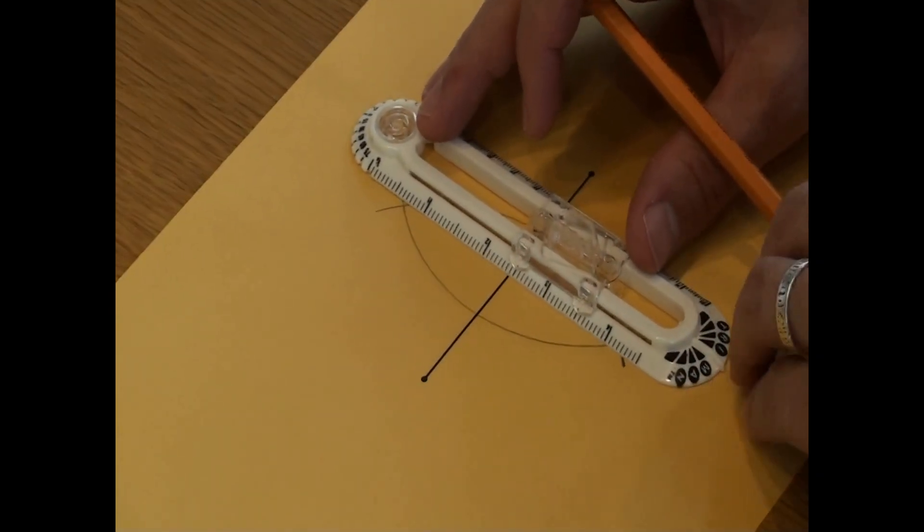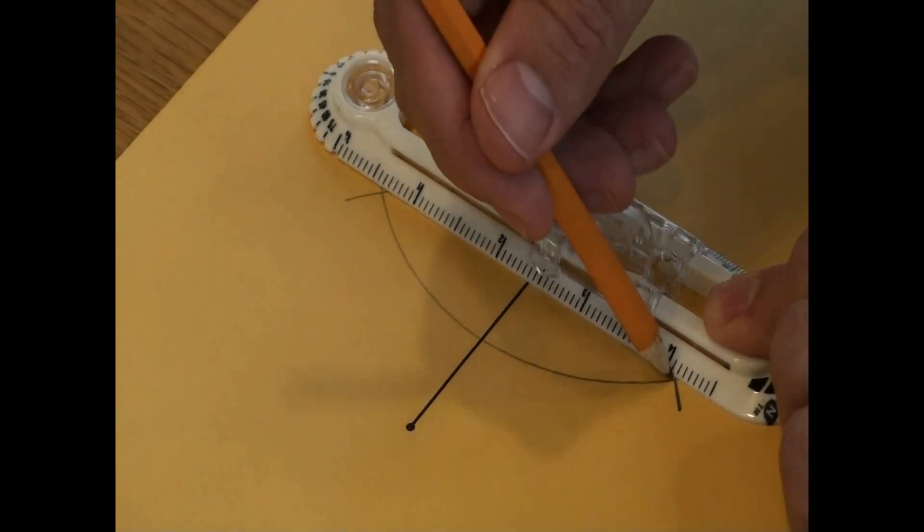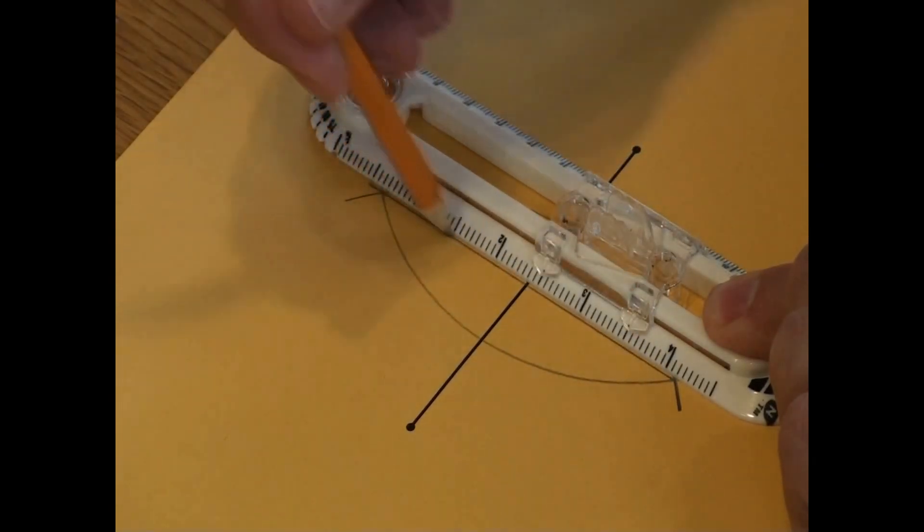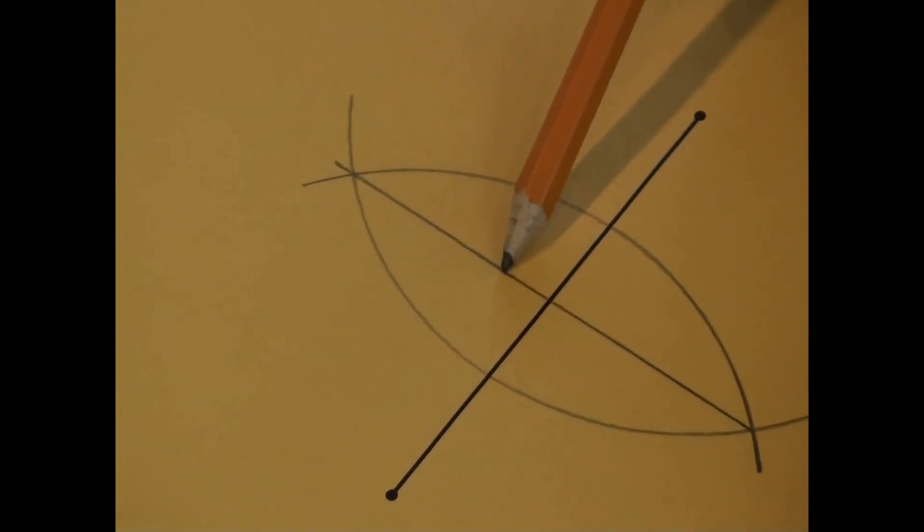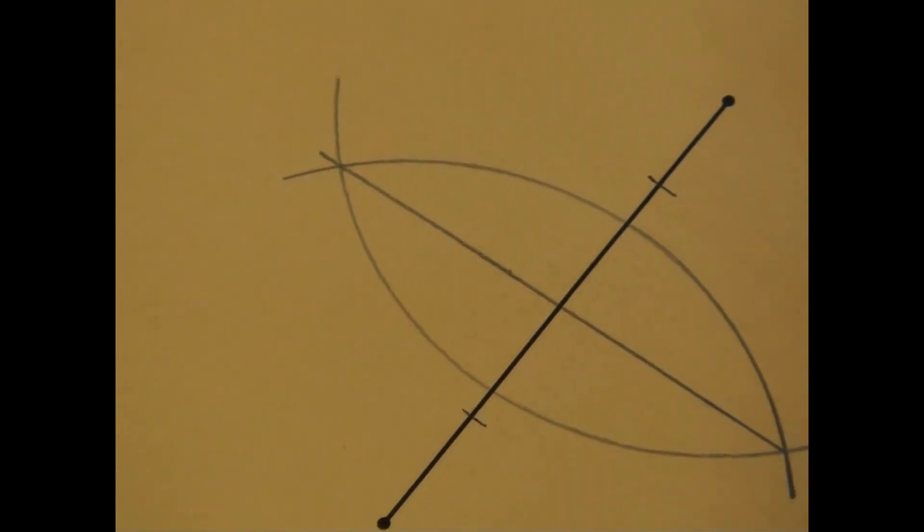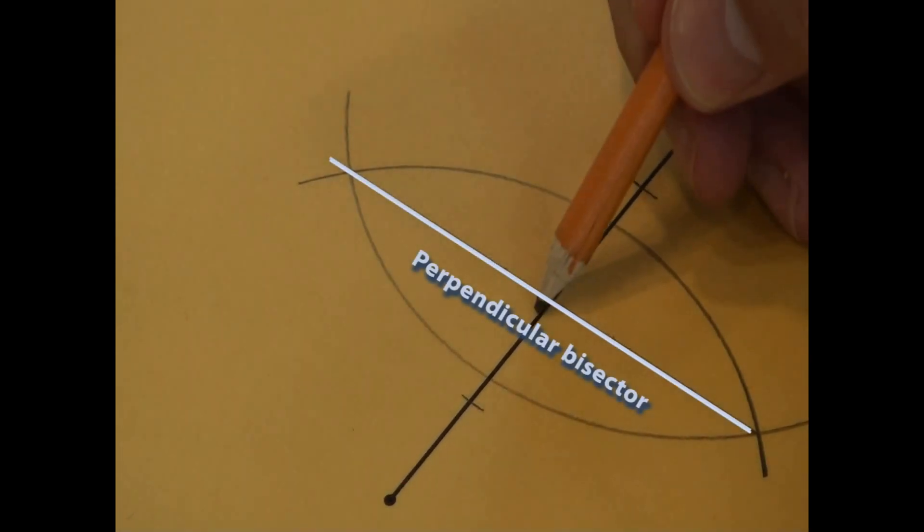Using the straight edge, connect the arc's intersections. This new line segment bisects the original line segment. In addition to bisecting the original line segment, this new line segment is perpendicular to the original line segment. We call this segment a perpendicular bisector.